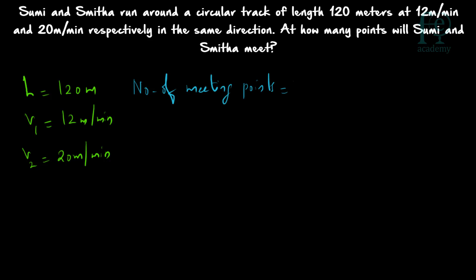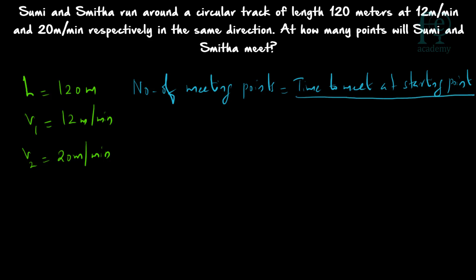The shortcut formula is: the number of meeting points equals the time to meet at the starting point divided by the time to meet anywhere on the track. This is the thumb rule for solving these kinds of questions. The number of points at which the two persons will meet around a circular track equals time to meet at starting point divided by time to meet anywhere on the track.